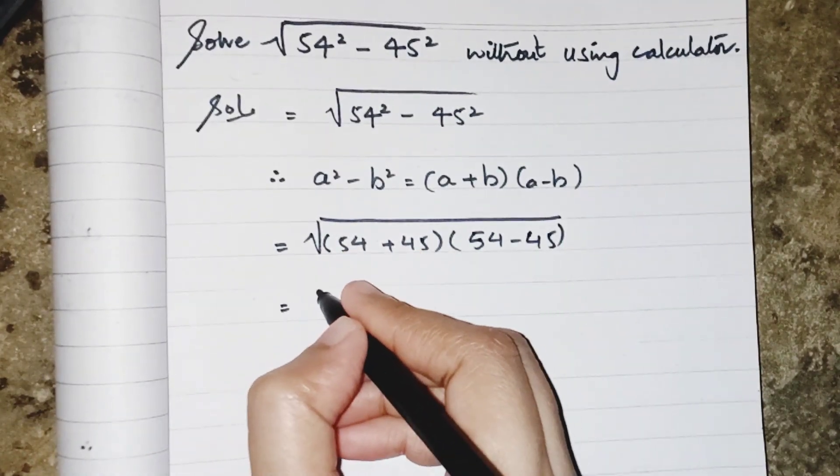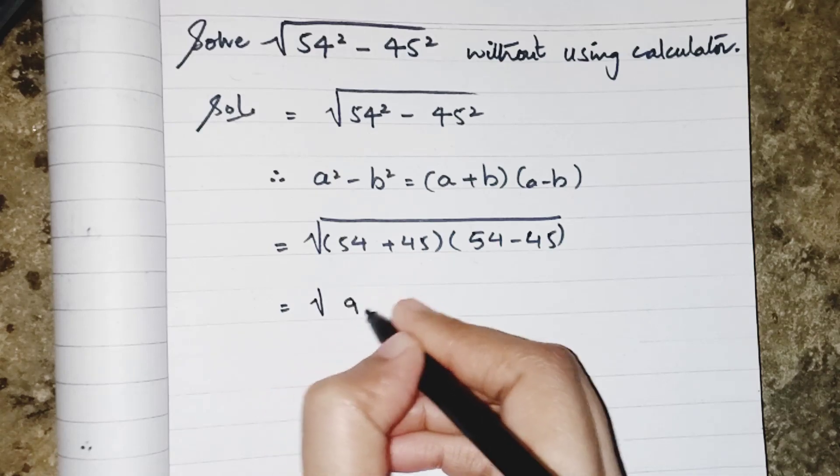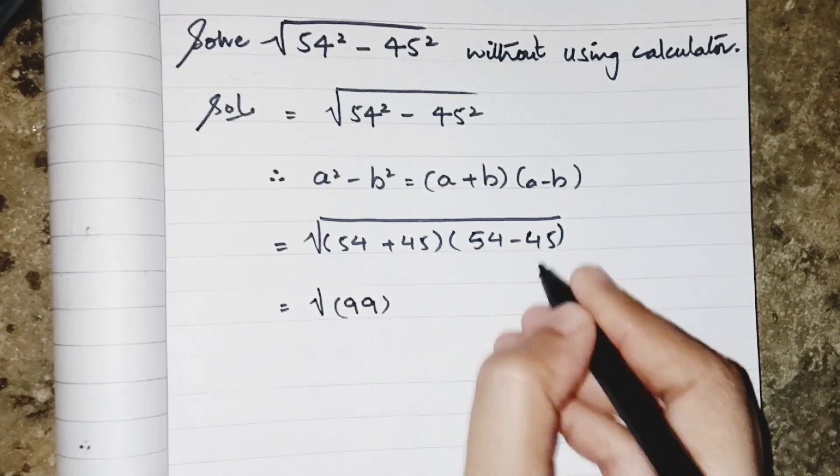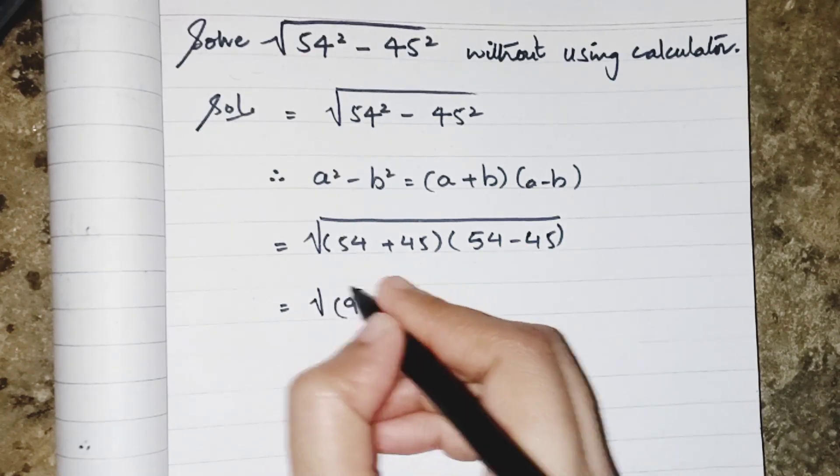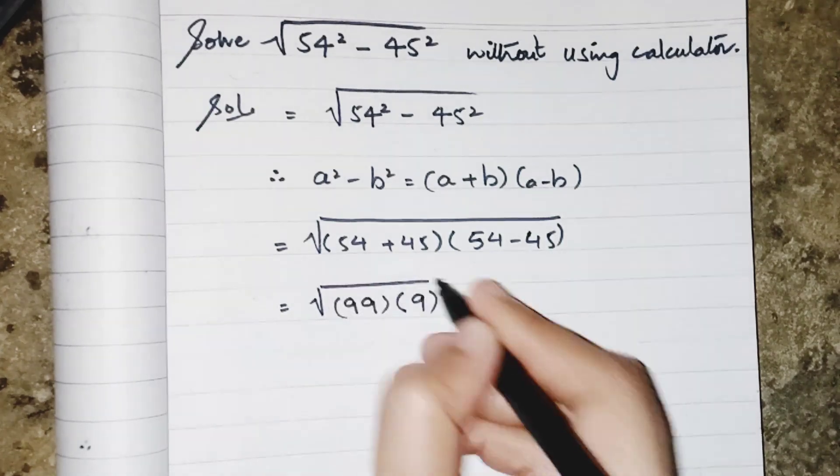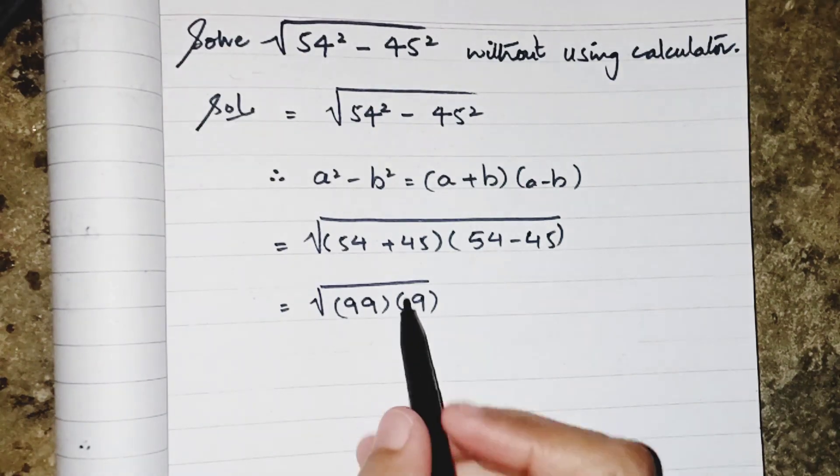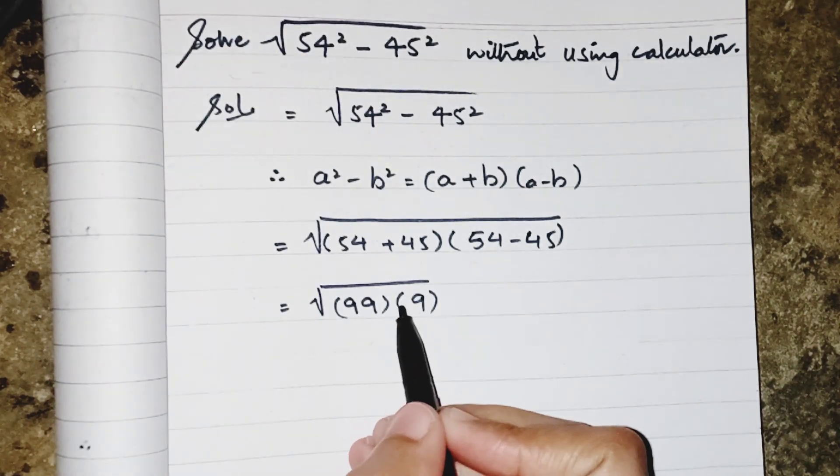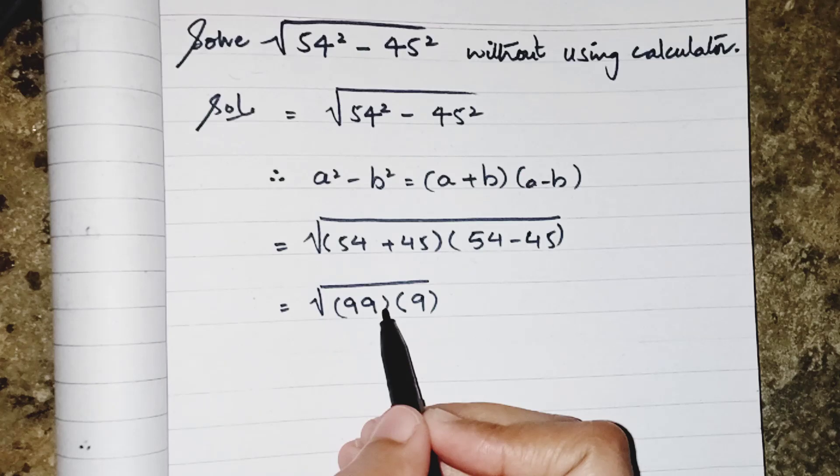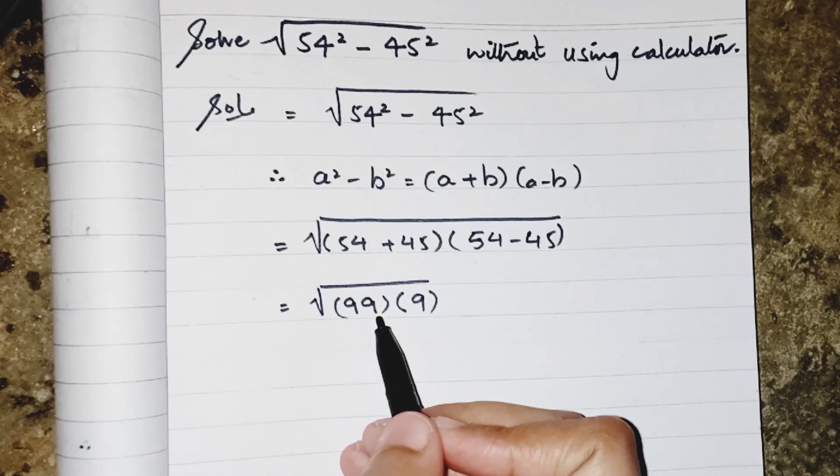When I add 54 and 45, it results as 99, and the subtraction between them will result as 9. I have to multiply both of them, but if you focus on the question, if I multiply both of them, I will get a huge value and finding the root is more difficult in a short time.